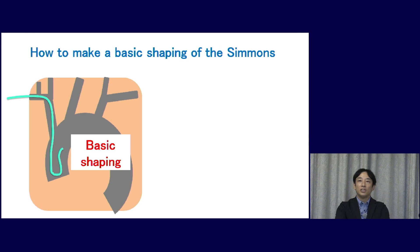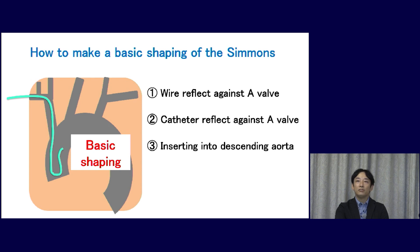As seen in this picture, this is the ideal shape of the Simon's catheter to select each vessel. I'll be demonstrating three techniques for how to make this basic shape of the Simon's catheter.